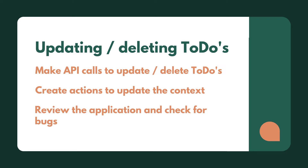Hey guys, welcome back to another lesson. In this lesson, we're going to take a look at updating and deleting to-dos. We're going to make API calls to update and delete those to-dos on the client, create some actions in the context, and then review the whole application and check for any bugs.